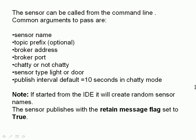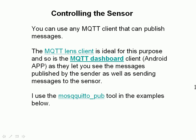The retain flag is very important. In non-chatty mode, the sensor only publishes changes and it might only change once a day, so anyone subscribing to that sensor data should receive the latest status straight away — which they will get with a retained message. To control the sensor you can use any MQTT client that can publish messages, such as the MQTT Lens client or the MQTT Dashboard Android app.